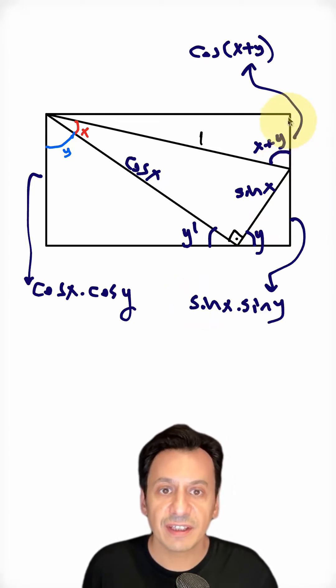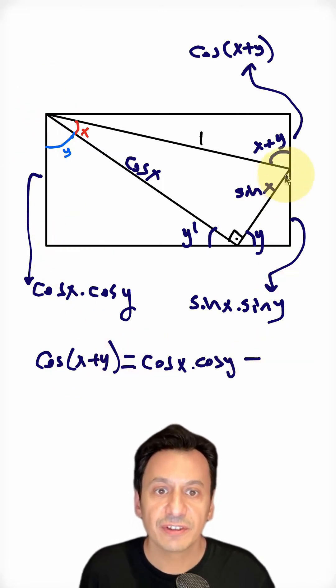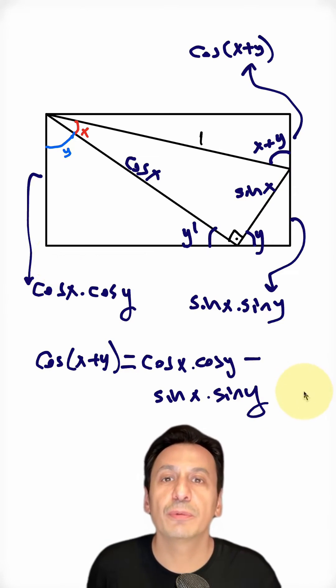Now, to find this line segment here, it will be enough to subtract this line segment from the short side of the rectangle. Let's write down what I just said. Cosine of x plus y equals the short side of the rectangle minus this side here. In this way, we've found the expansion of cosine of x plus y.